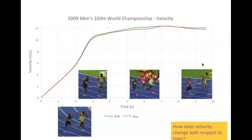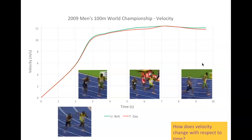How does velocity change with respect to time? When we talk about velocity over time, that is meters per second per second — or meters per second squared — also known as acceleration. Acceleration is our change in velocity. It is also a vector, meaning it has direction and magnitude. The equation is change in velocity over change in time.